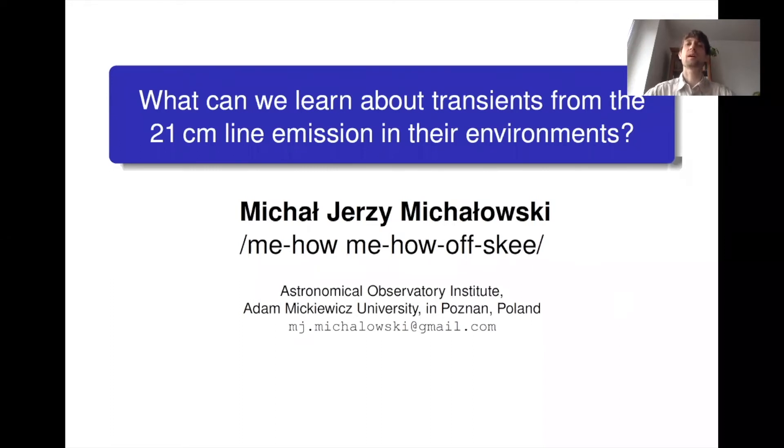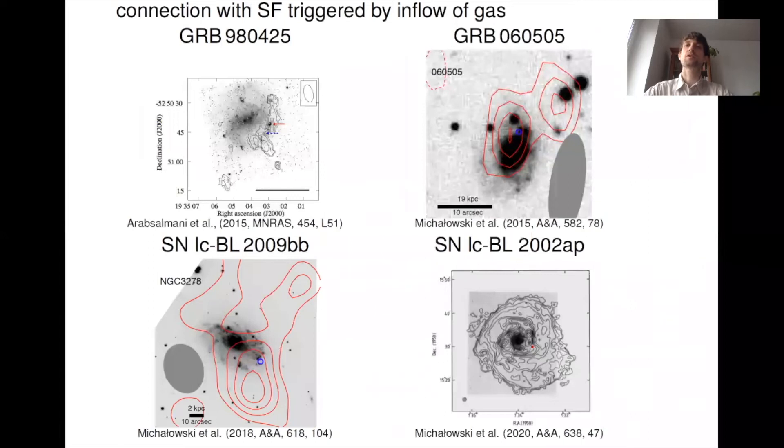Hello, I'm Michał Michałowski from Poznan, Poland, and I would like to talk about what we can learn about transients from 21 cm H1 line emission in their environments. First, when we look at the host galaxies of gamma ray bursts or broad line supernovae type 1C, we always see strong concentration of H1 close to the event position. That suggests that the birth of their progenitor is connected with the inflow of gas from the intergalactic medium.